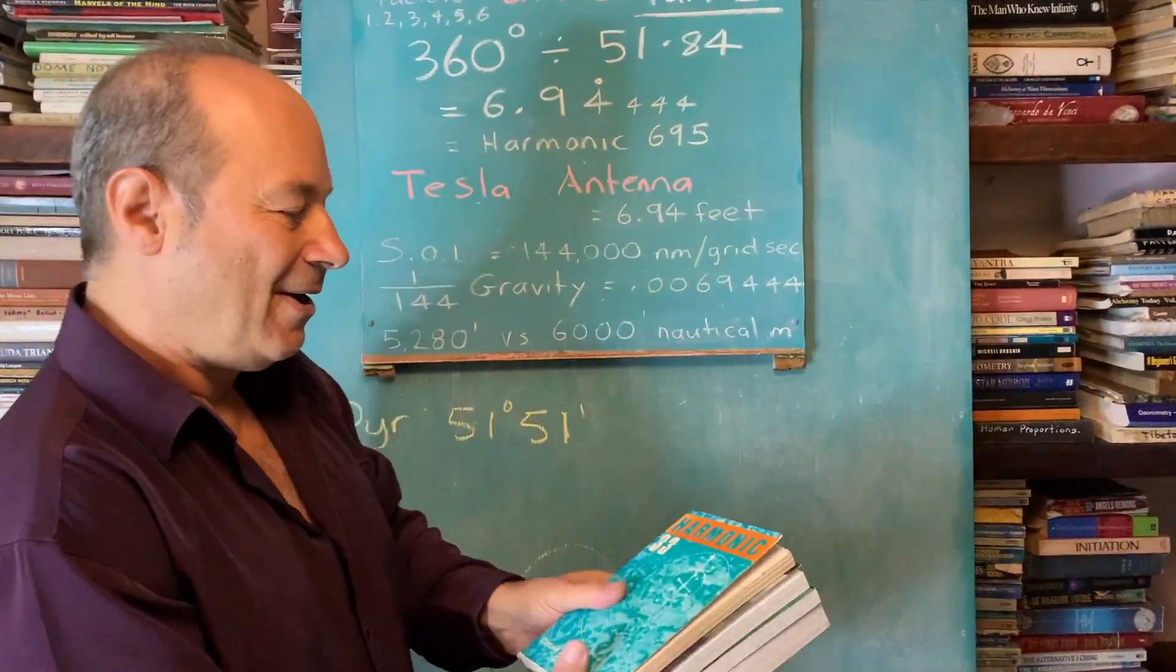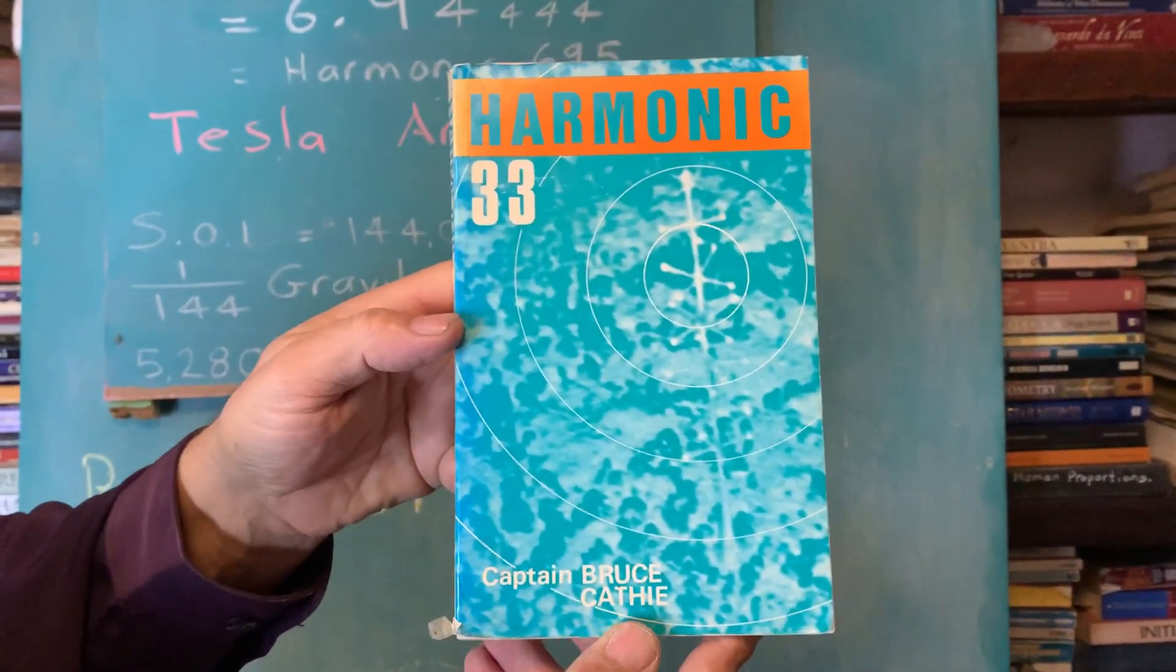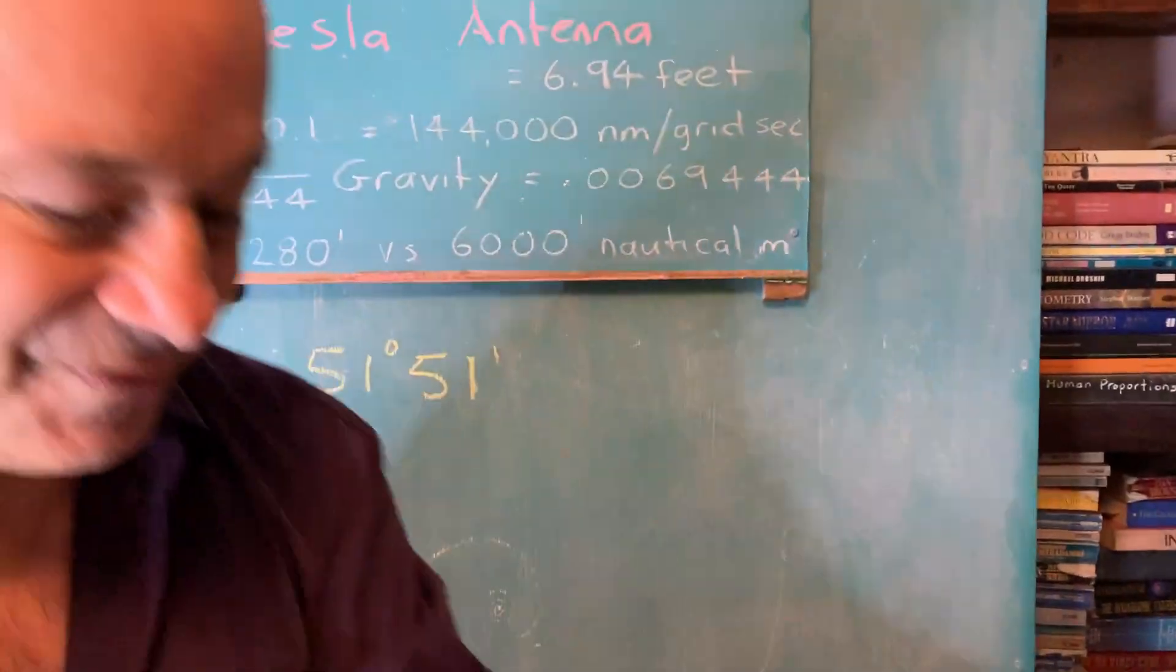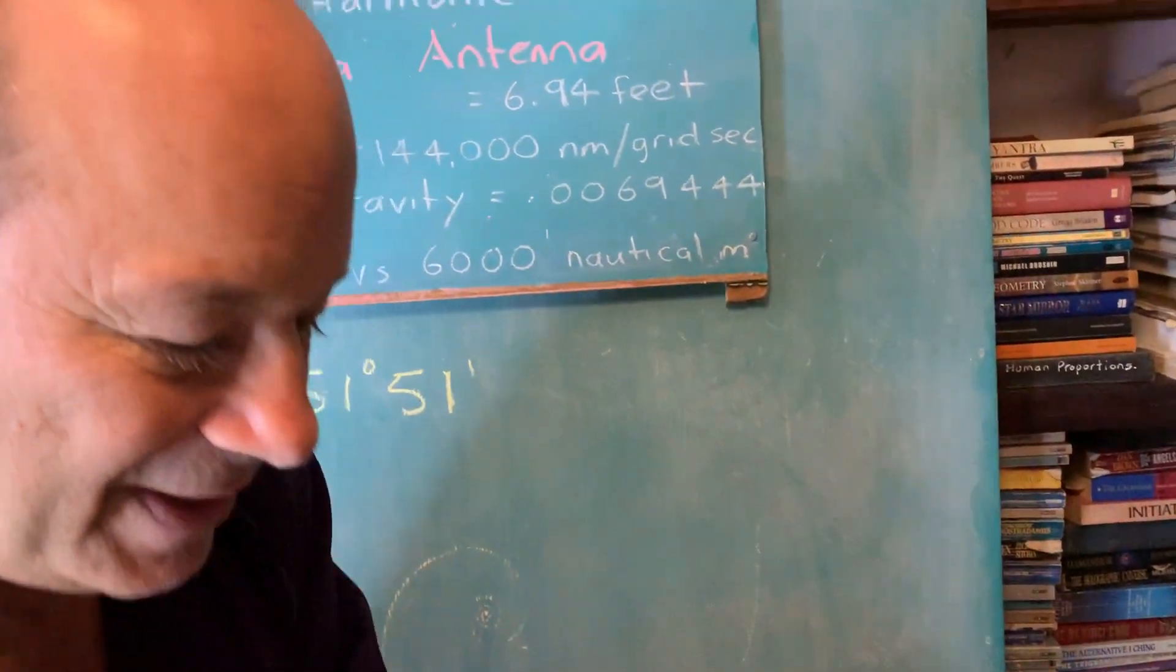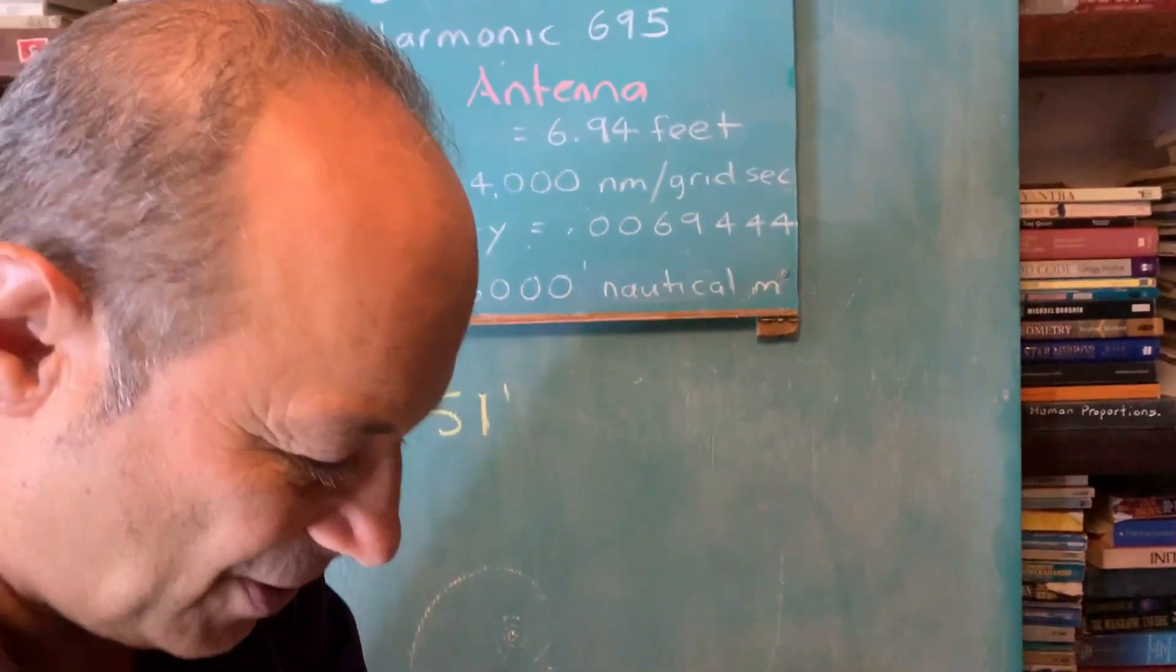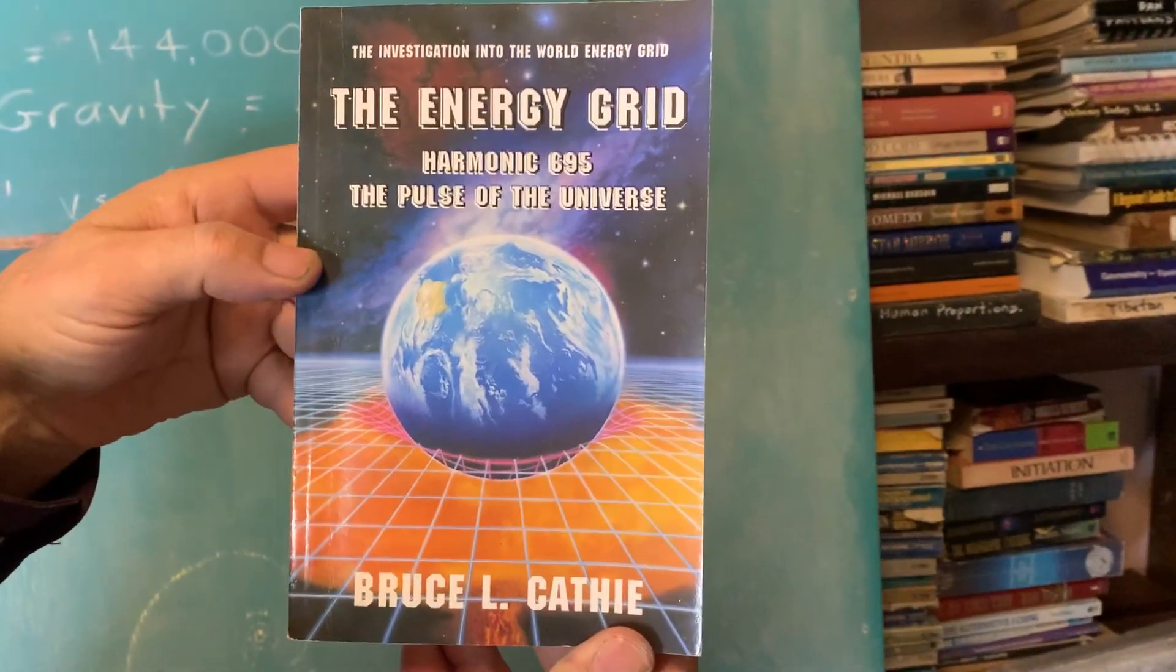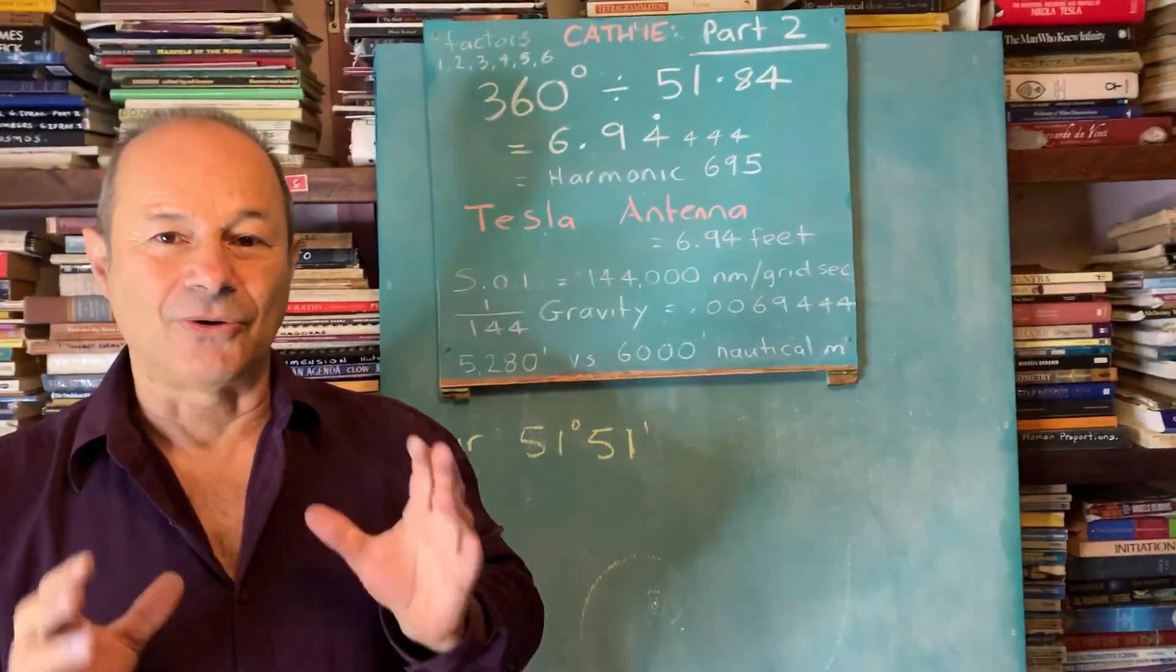This is all based on Bruce Cathy's work. Harmonic 33 was his first book, showing how they discovered an antenna under the ground on one of the octahedral points of the planet. Then The Bridge to Infinity, The Harmonic Conquest of Space, and finally the Energy Grid Harmonic 695, the pulse of the universe. This is all about harmonic maths, which is not taught at schools, and I believe it's the key to all the future sciences.